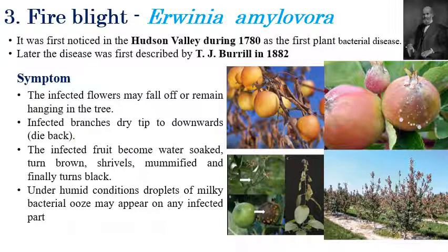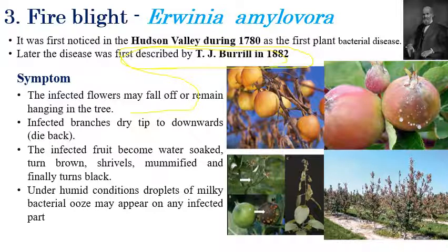The third disease is fire blight, caused by Erwinia amylovora. This is a very important disease — it laid the foundation for plant bacteriology. This disease was first reported in Hudson Valley in 1718 and was first described by TJ Burrill in 1882.